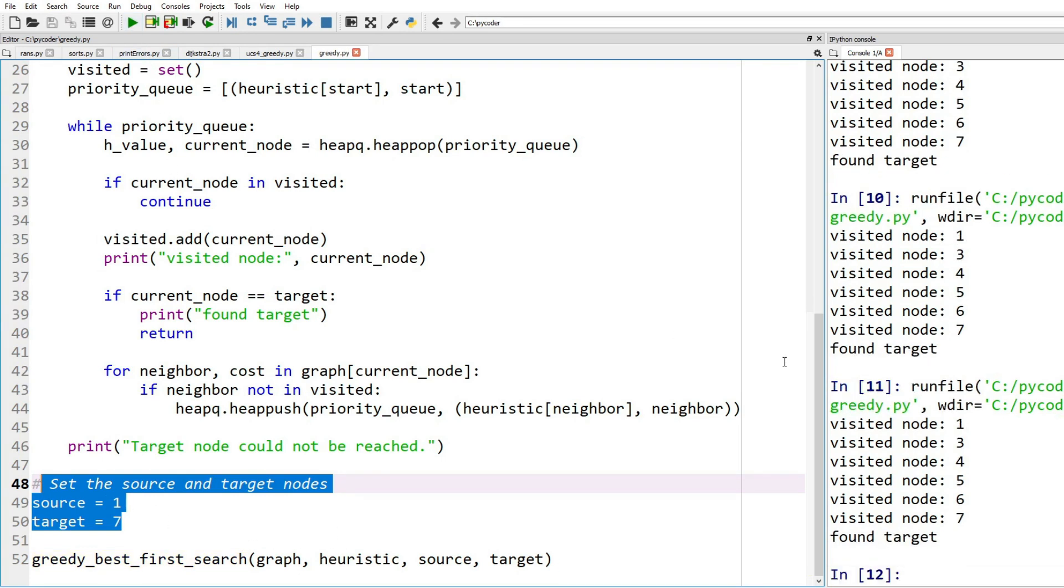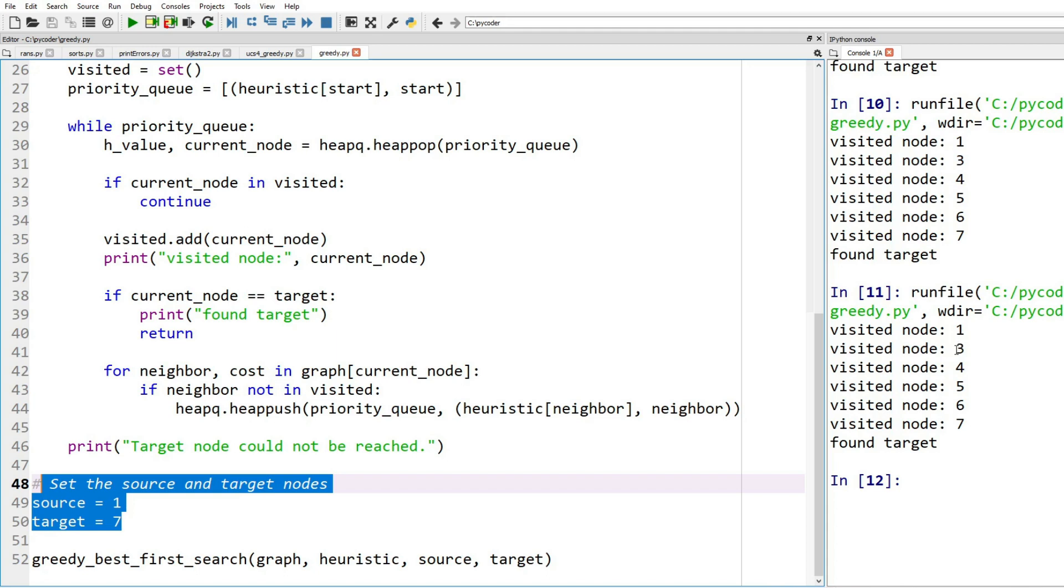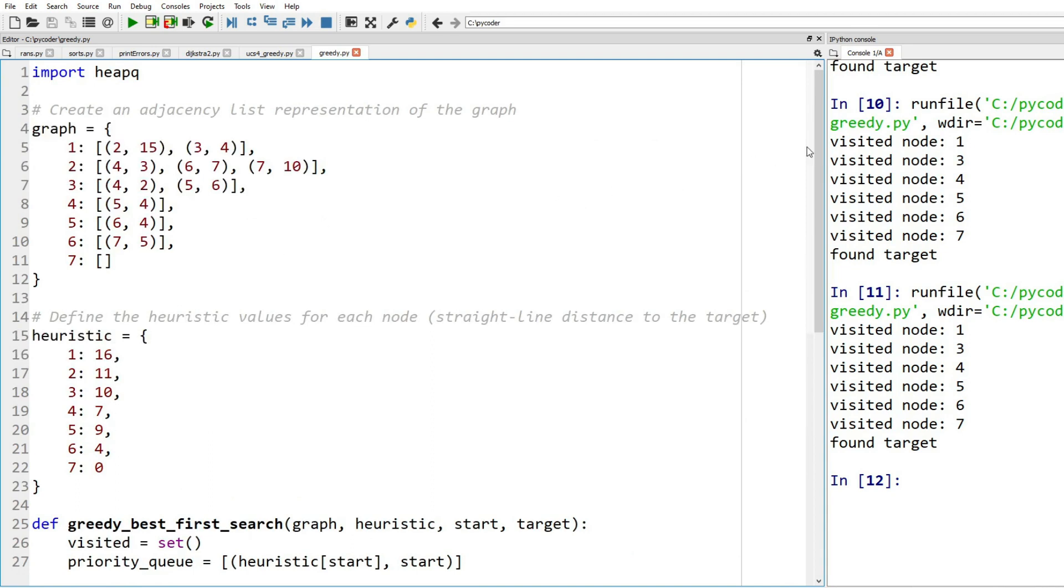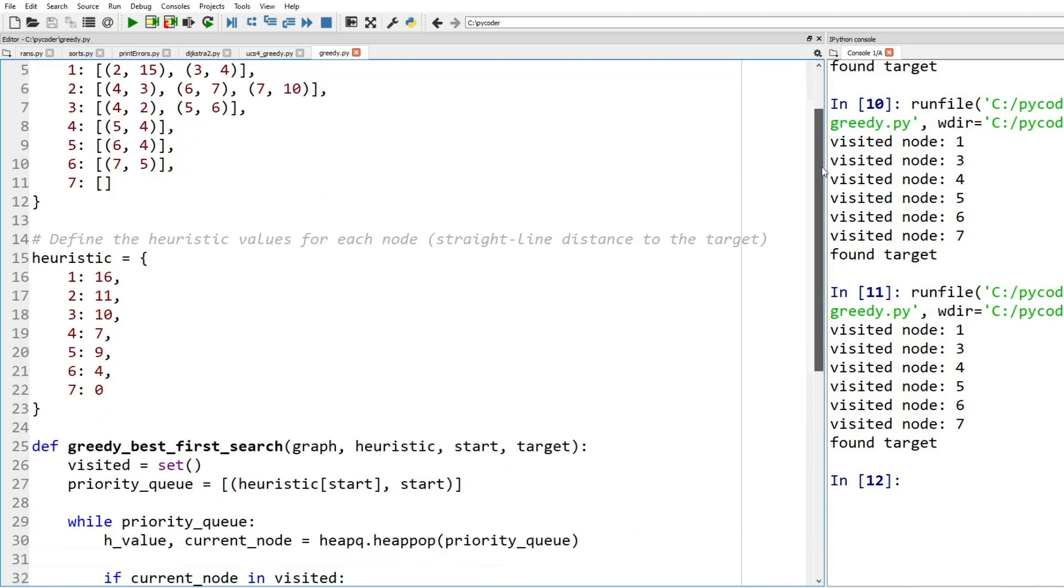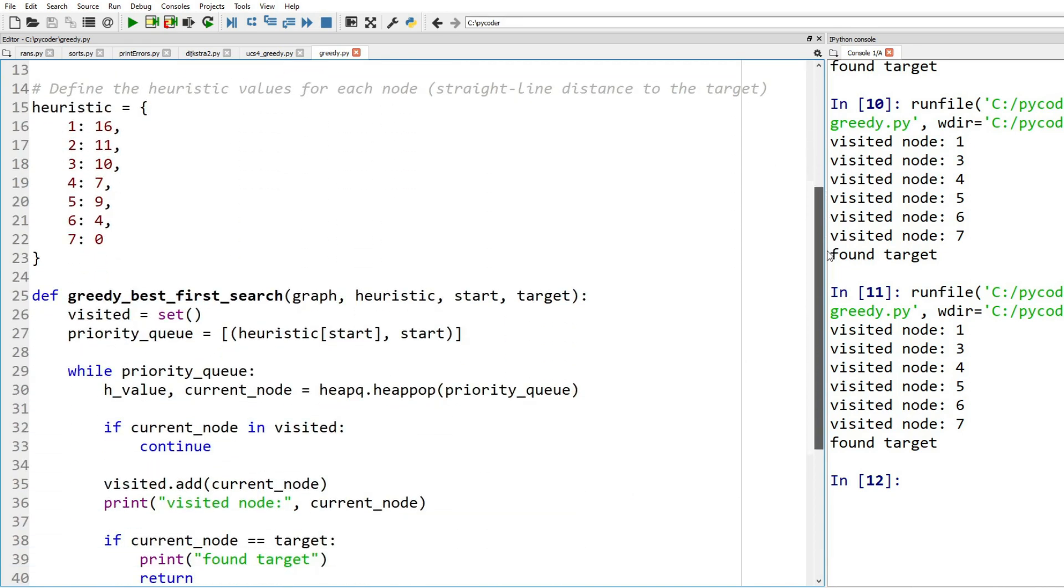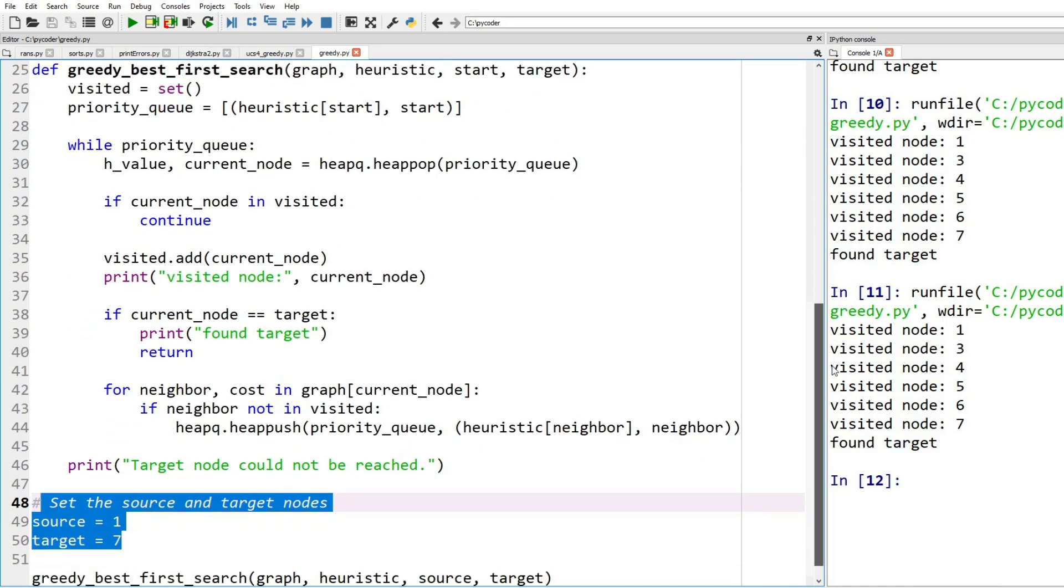And then when we run the code, you can see we visited 1, 3, 4, 5, 6, and 7. So that is our code for our greedy best-first search.